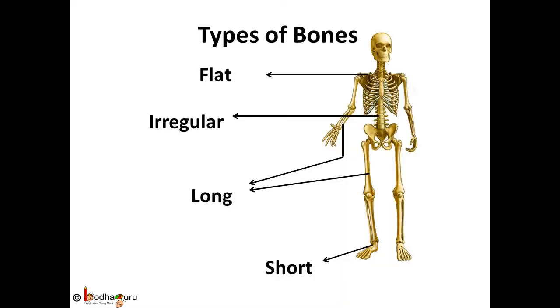If we see in detail, we will find that there are various types of bones in our body. Some are long, like bones in forearm and thighs. While some are short, like the bones in the wrist, foot or ears. Some of them are flat, like the bones in the skull or the shoulder plate or even the breast bone. While some are irregular, like the vertebrae.